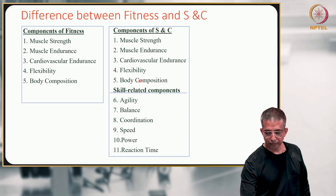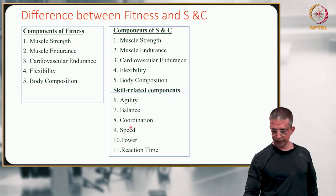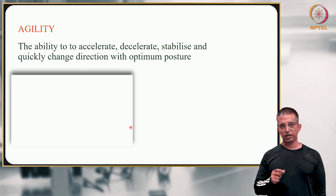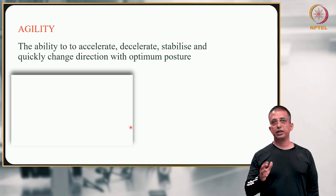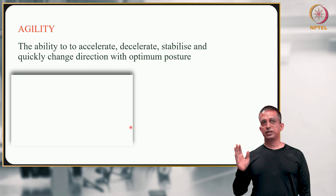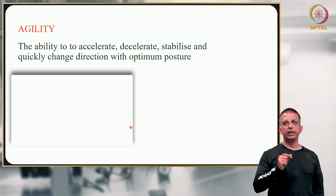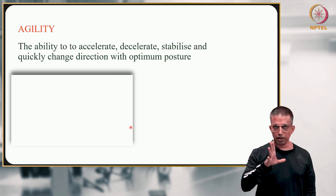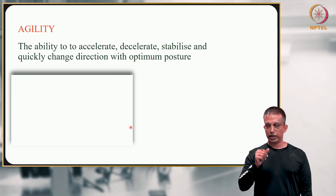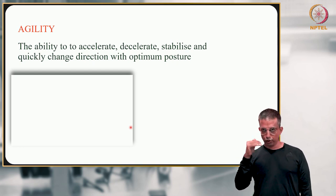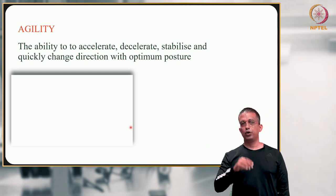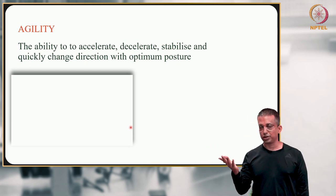Now talking of agility — what is it? Agility is the ability to accelerate, decelerate, stabilize, and quickly change direction with optimum posture. In simple words, you are able to start, slow down, stop, change direction — all fast and with good posture. Good posture matters because there's no point doing this and then falling. If you're a football player, you want to explode, decelerate, slow down, then change direction in the right posture.